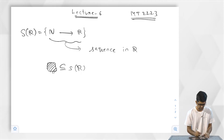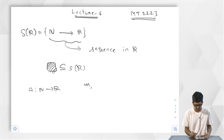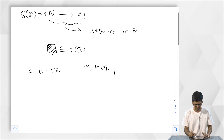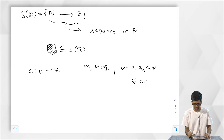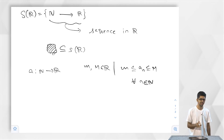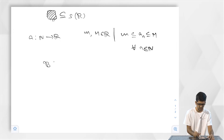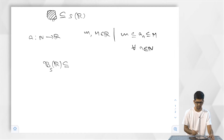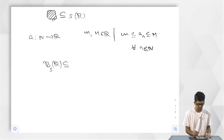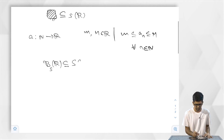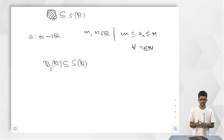A sequence A is said to be bounded if there are two real numbers m and M such that m ≤ A_n ≤ M for every n in N. This is what a bounded sequence is. The notation BSR, or BSR if you want to avoid confusion with BR for subsets of R, denotes the set of all bounded sequences in R.